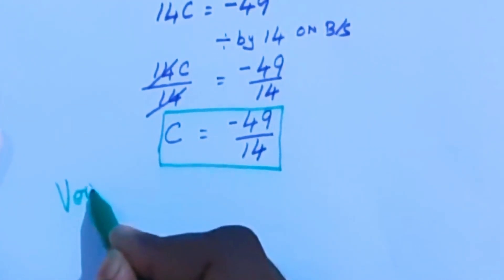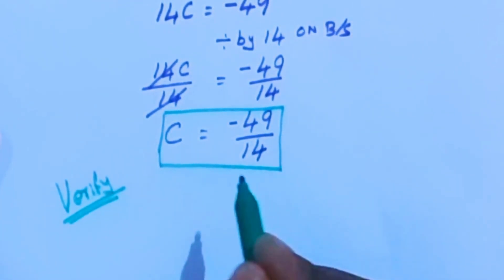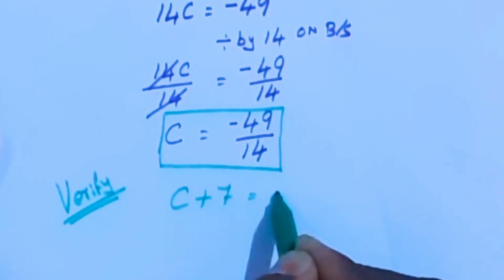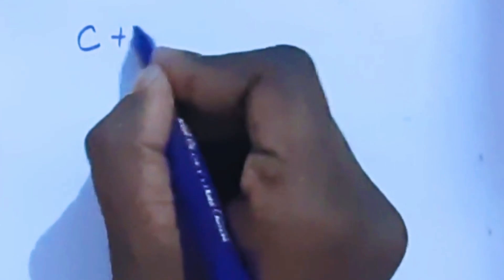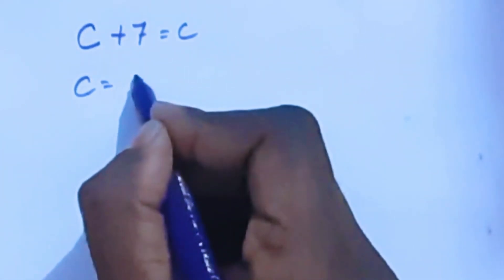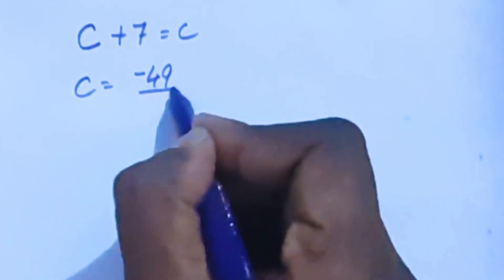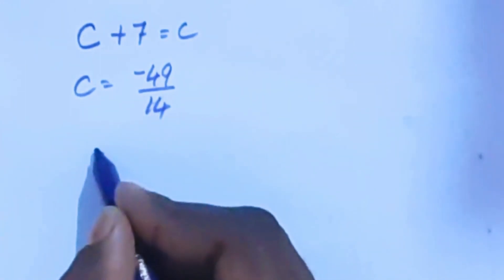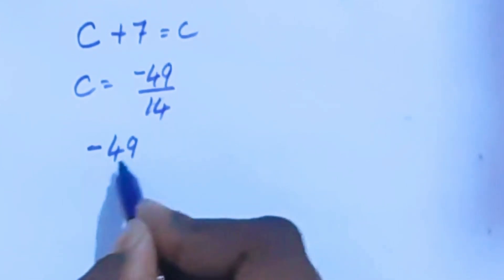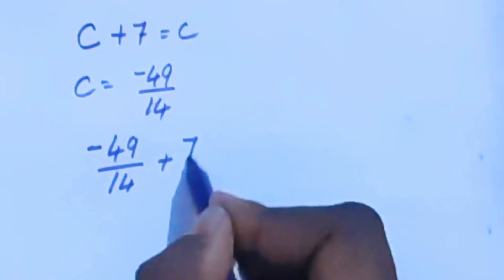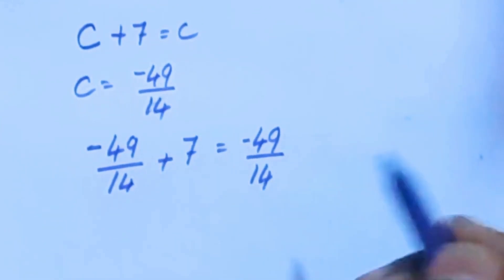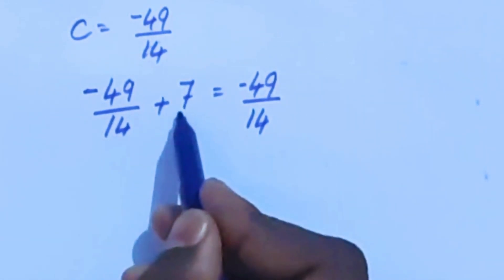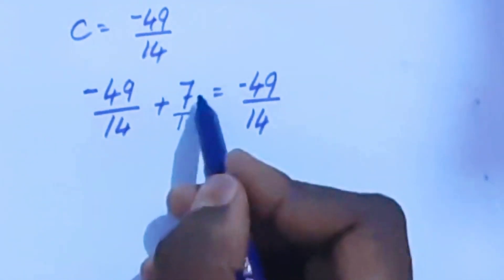Now we are going to verify this. The original equation is √(c + 7) = c. Substituting the c value of −49/14: √(−49/14 + 7) = −49/14.